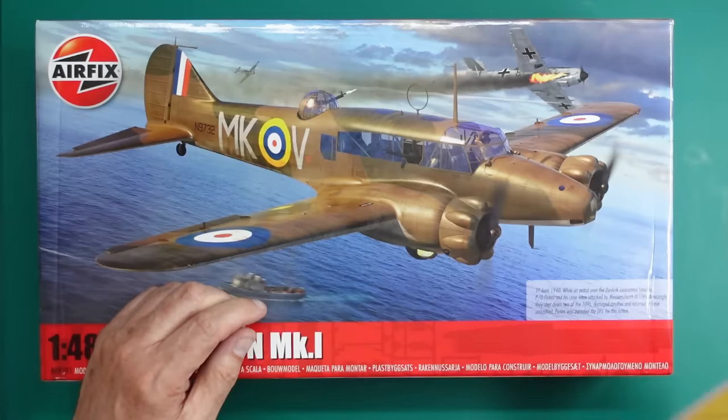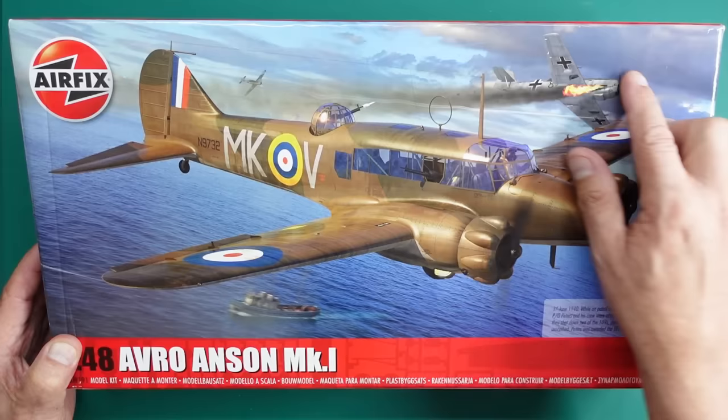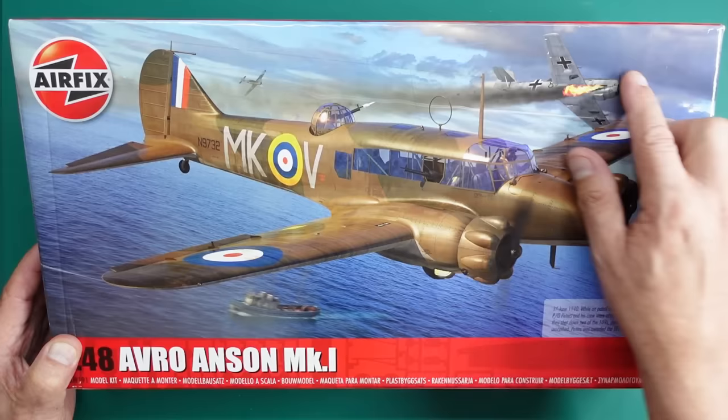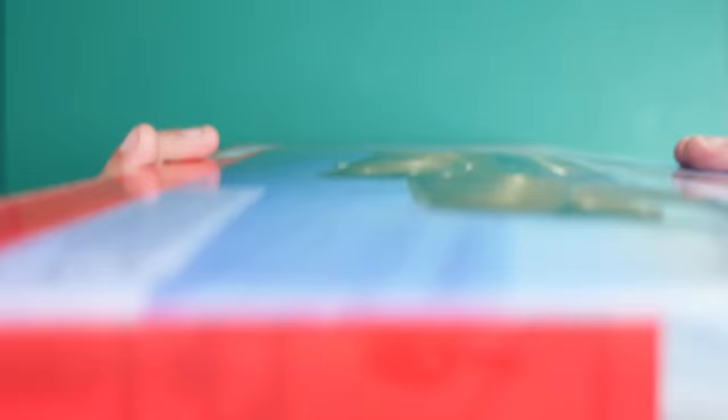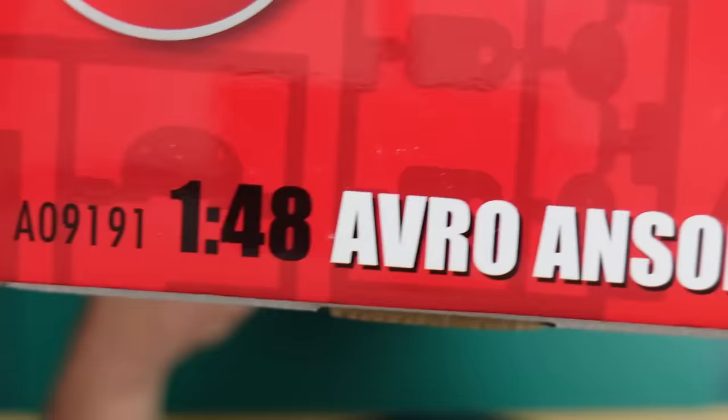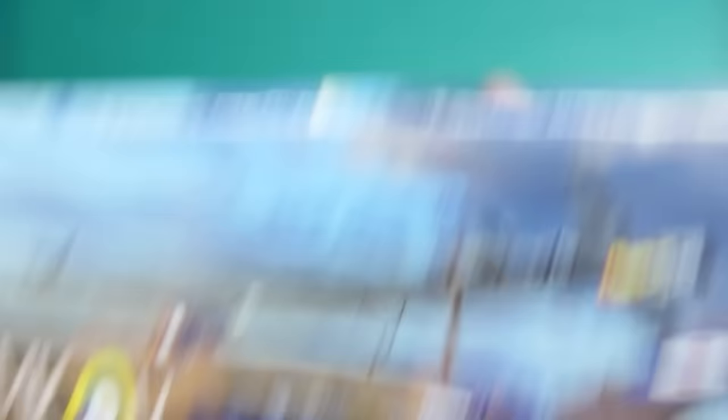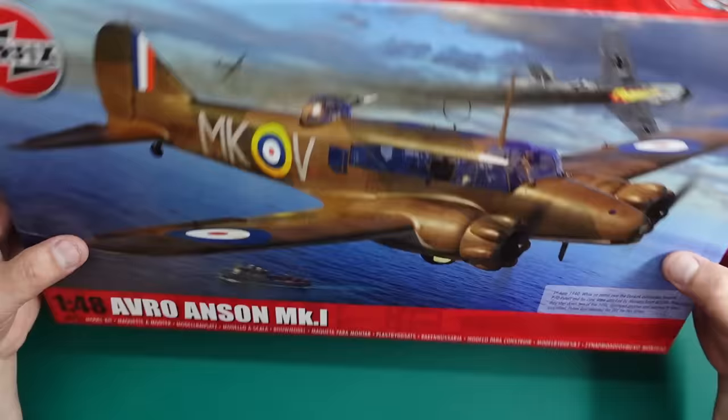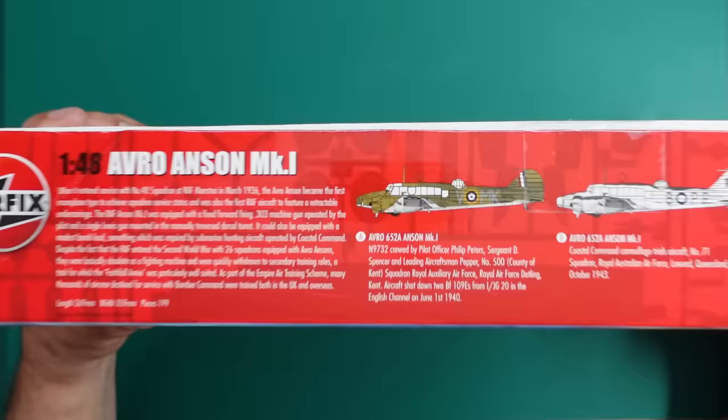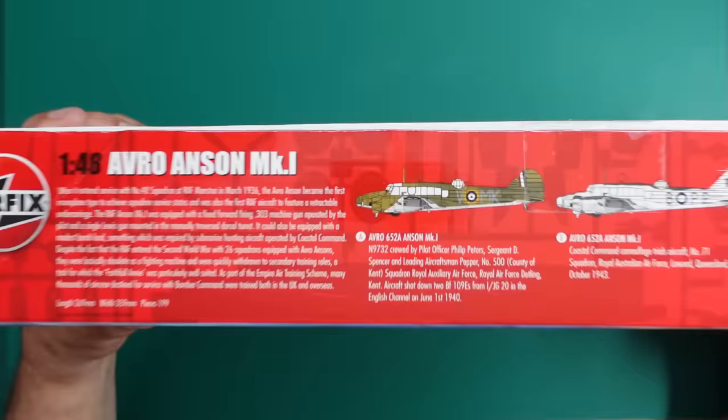So the kit is number A09191. I'll just give you some information on it here. You can see the plane probably just shot down that 109. Going around the box we've got all the warnings and everything in all the different languages. Cartograph decals, yes Airfix cartograph decals are awesome. Then we've got the kit number, another image, and then round here we've got it upside down. So we've got some words about the Anson in there, you can freeze frame that and have a read should you want to.